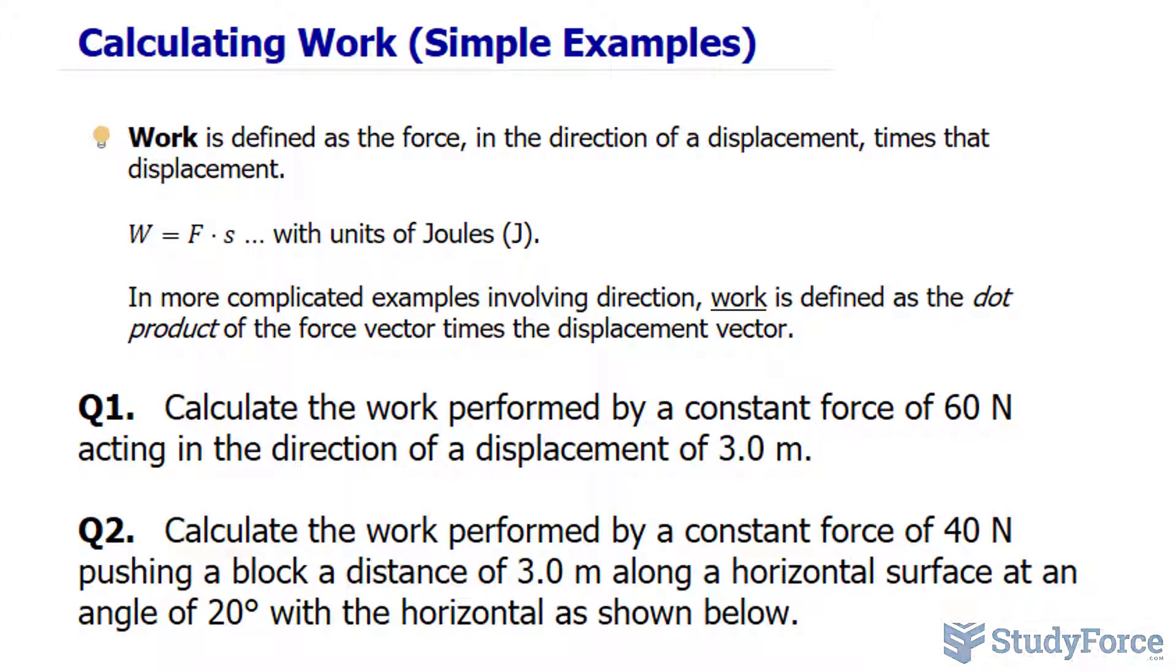The units for work are in joules, so when you have force in newtons being multiplied by meters, you simply replace that with joules. In more complicated examples involving direction, work is defined as the dot product of the force vector times the displacement vector. We'll look at examples involving that in questions two and three.